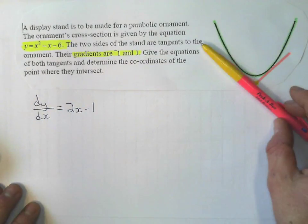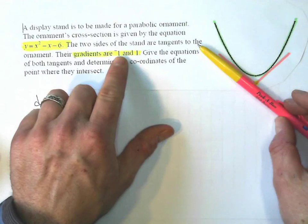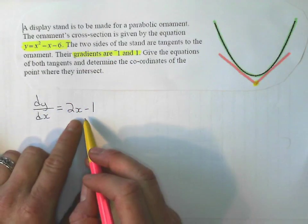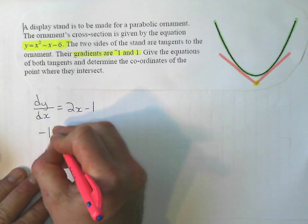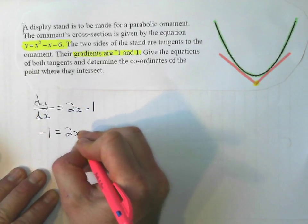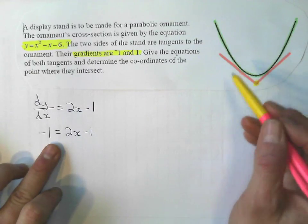Now, the gradient of this line, they tell us it's negative 1. So remember, that's a gradient function. I set this equal to negative 1, and I solve for the x-coordinate. Negative 1 equals 2x - 1. So right now, I'm just working with this line.